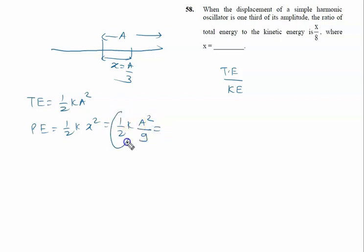Half k A squared is total energy, let's say it is E. So we can write potential energy as E by nine.